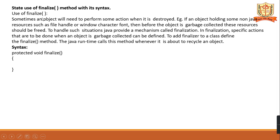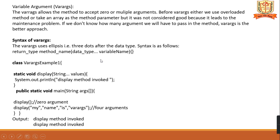The finalize method is used when an object needs to perform some action when it is destroyed. If an object holds some non-Java resources such as a file handle or window character font, and the object is garbage collected, these resources should be freed. The finalize method, when called, will release and clean up the memory.